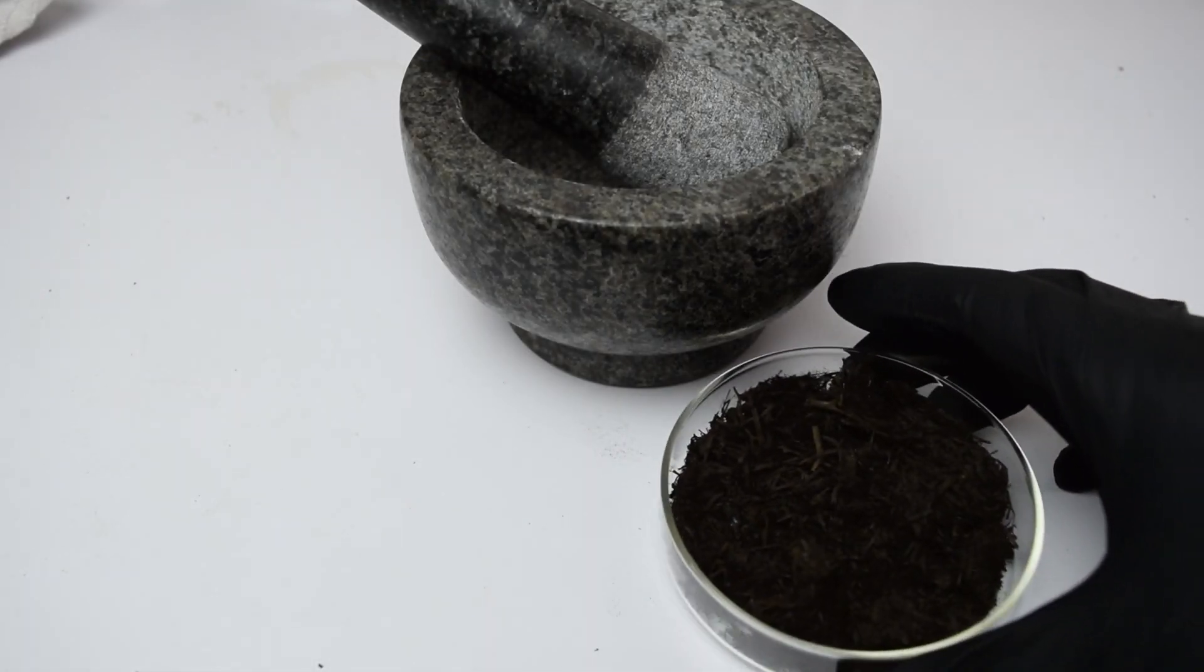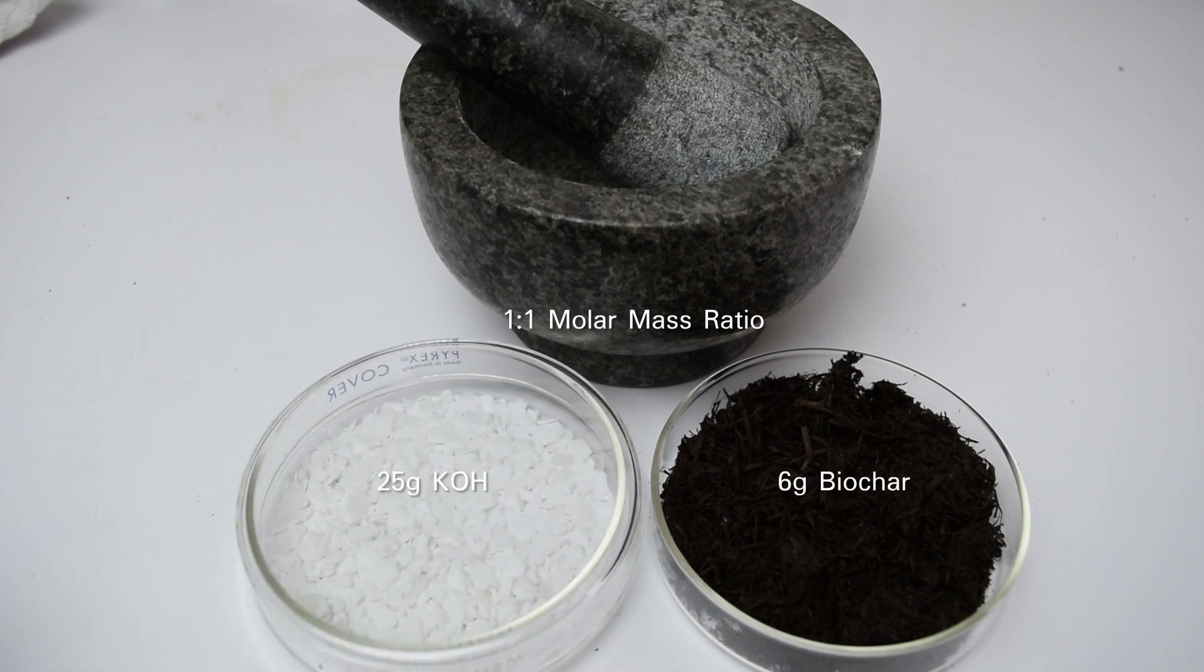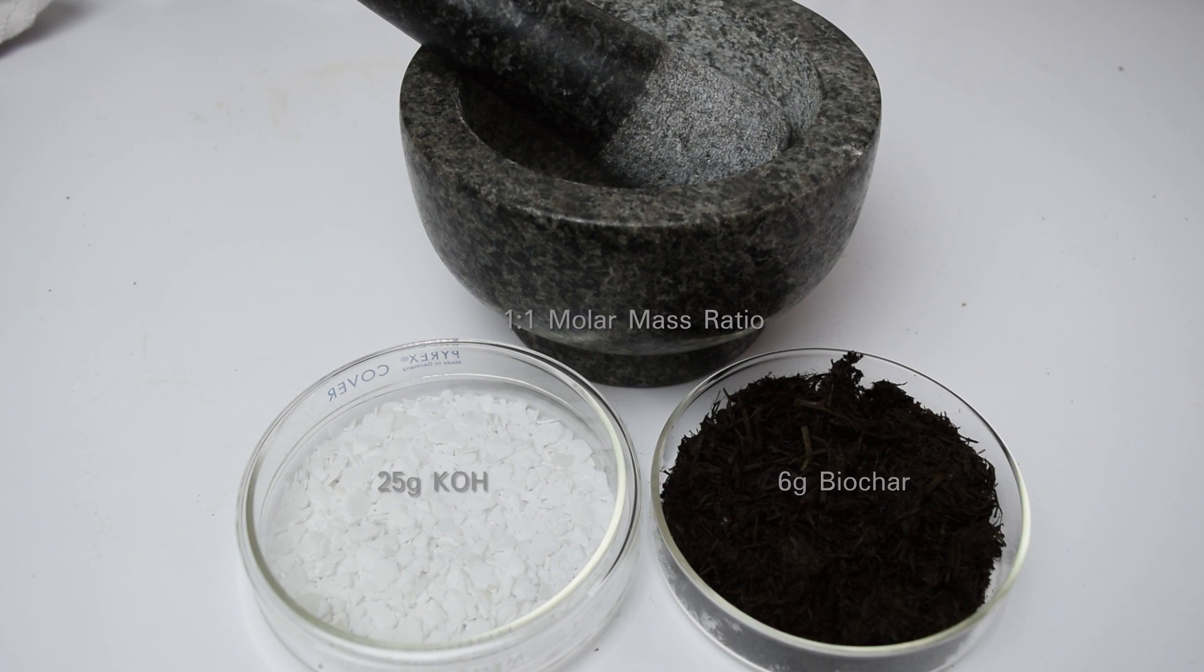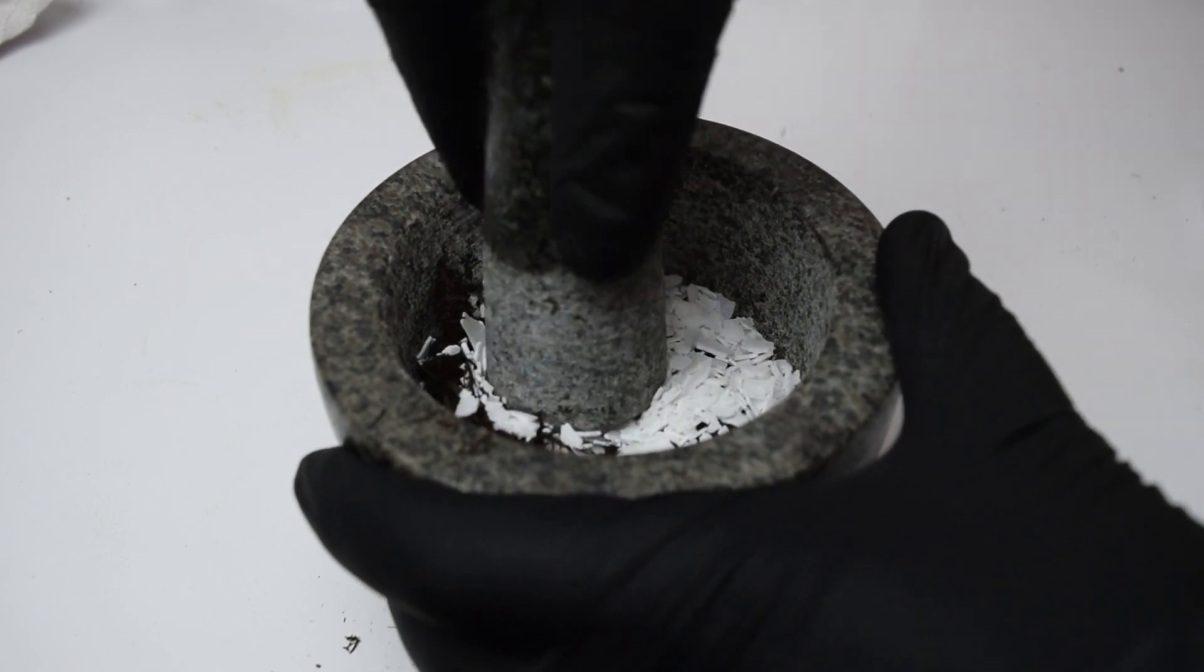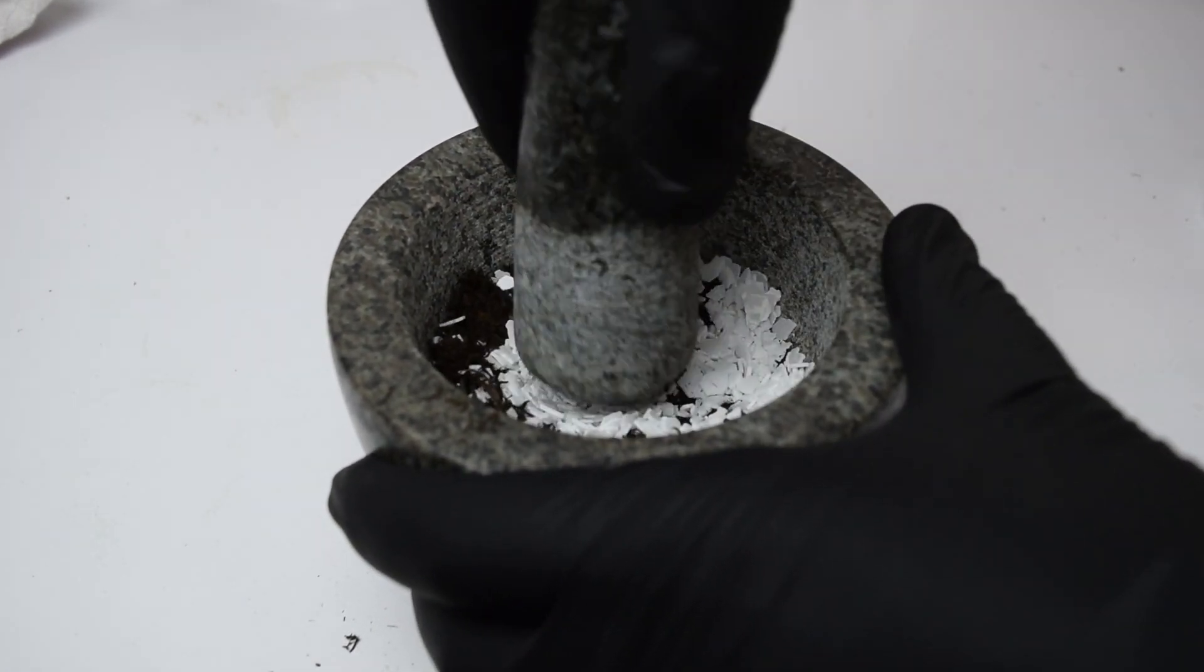After the biochar has dried, it needs to be mixed with potassium hydroxide in a one-to-one molar ratio. Here, I have 6 grams of biochar and 25 grams of potassium hydroxide. Biochar is about 75% carbon and 25% oxygen. They are then combined and ground with a mortar and pestle.